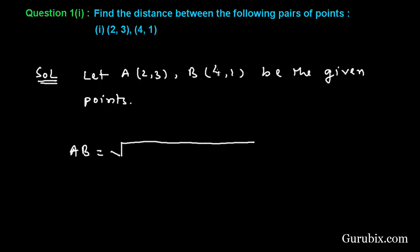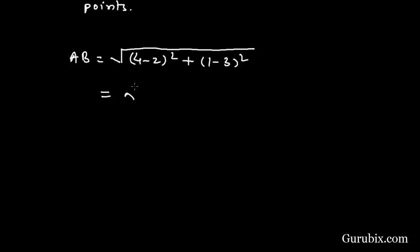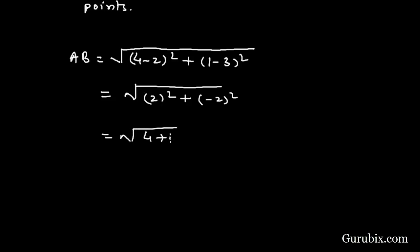This means square root of (4 minus 2) squared plus (1 minus 3) squared, which gives square root of 2 squared plus (minus 2) squared, that is square root of 4 plus 4, which is square root of 8, equal to 2 root 2.